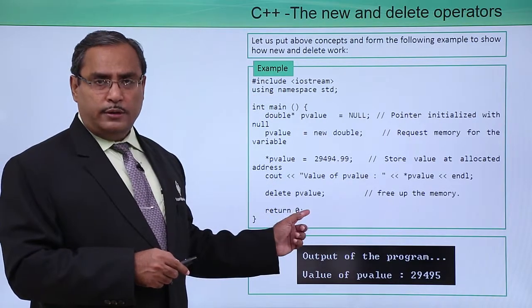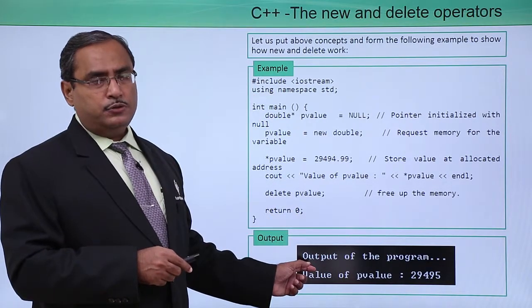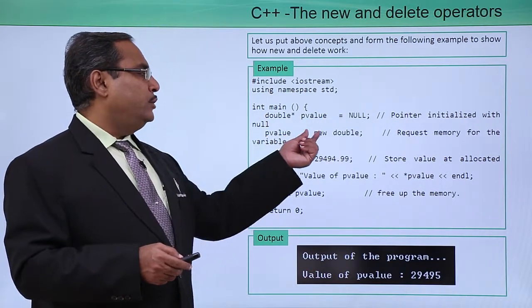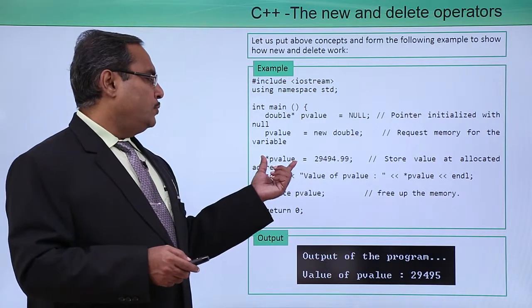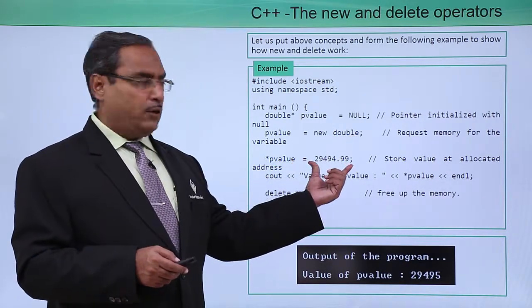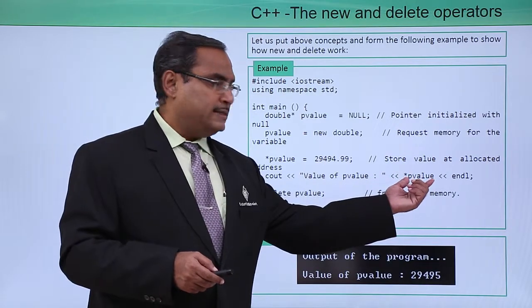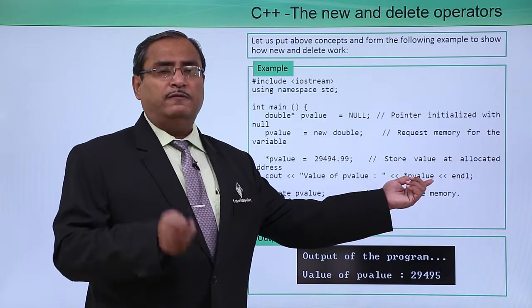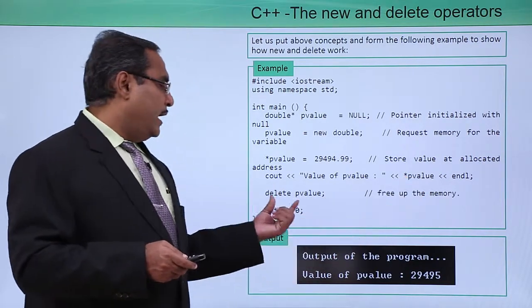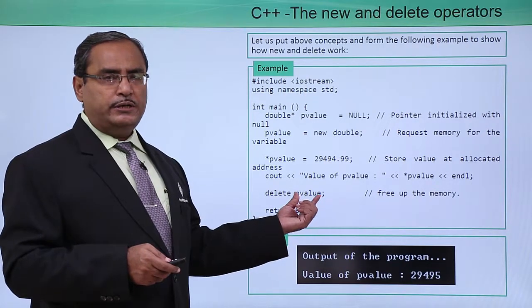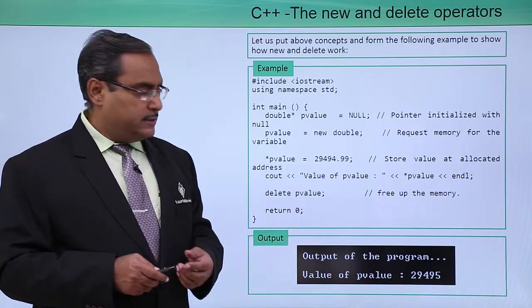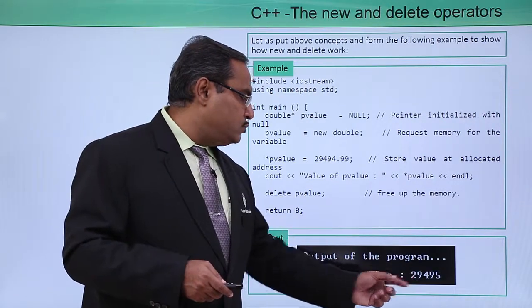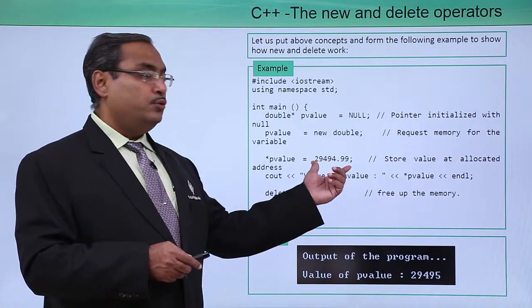Here is a sample code with its respective output. double* p_value = null, then p_value = new double. We store a value at the pointer and then print it — using *p_value prints the content; using p_value alone would print the address. We then release the memory using delete and terminate with return 0. The output shows the value of p_value is 29495, which was the value we stored.